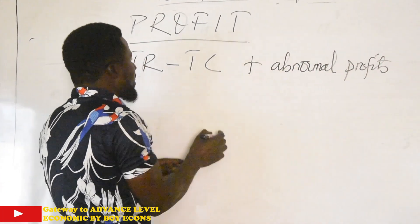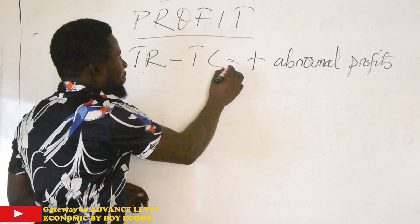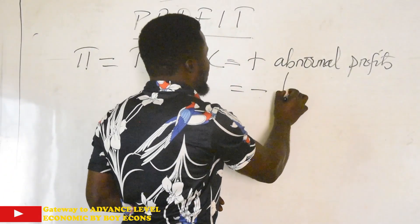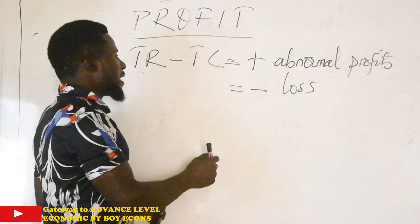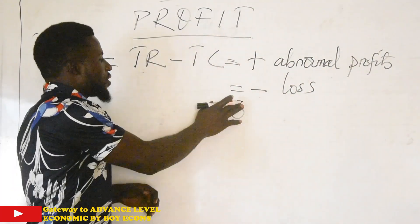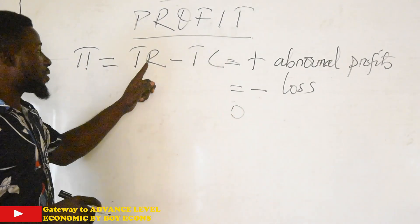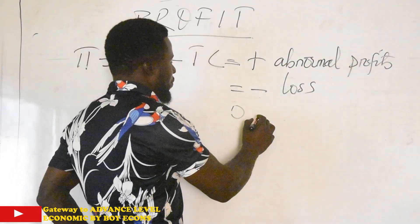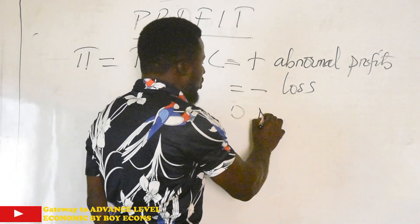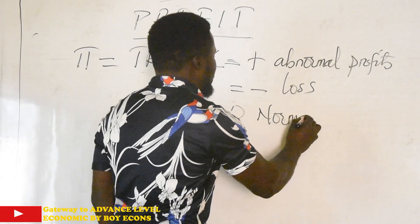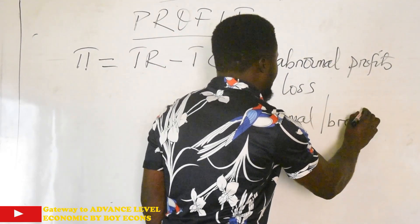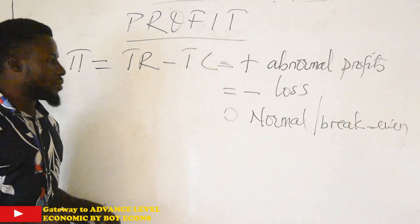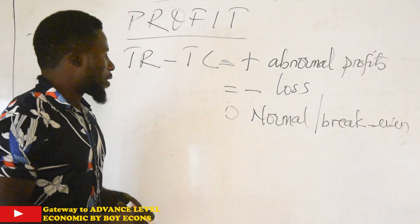If the difference between total revenue and total cost gives you a negative answer, it means that is a loss. And if the difference between total revenue and total cost gives you zero — that is to say revenue is equal to cost and you've gotten back exactly how much you invested — then we say that you have normal profit, also called break-even profit.